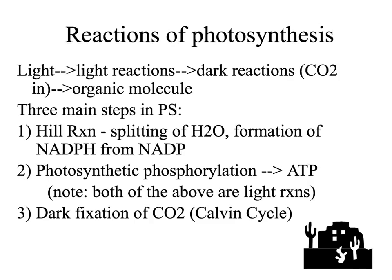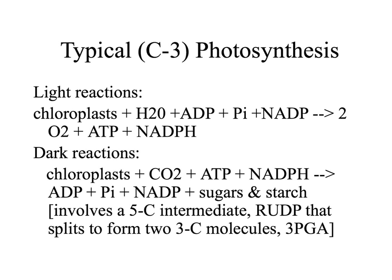In the Hill reaction, the sun's energy is used to split water molecules and to form the high-energy NADPH from NADP. The second light reaction is called photosynthetic phosphorylation — phosphorylation means adding a phosphate, so this makes high-energy ATP molecules. In the third step, we have dark fixation of carbon dioxide, called the Calvin cycle, named after Melvin Calvin who discovered it. Typical photosynthesis, called C3 photosynthesis to differentiate it from others, has a three-carbon intermediate.